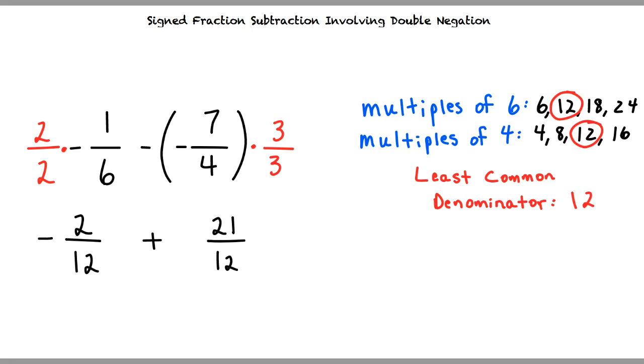Now all that is left is a little bit of addition. A negative 2 over 12 plus a positive 21 over 12 is equal to 19 over 12. This means that our final answer is 19 over 12.